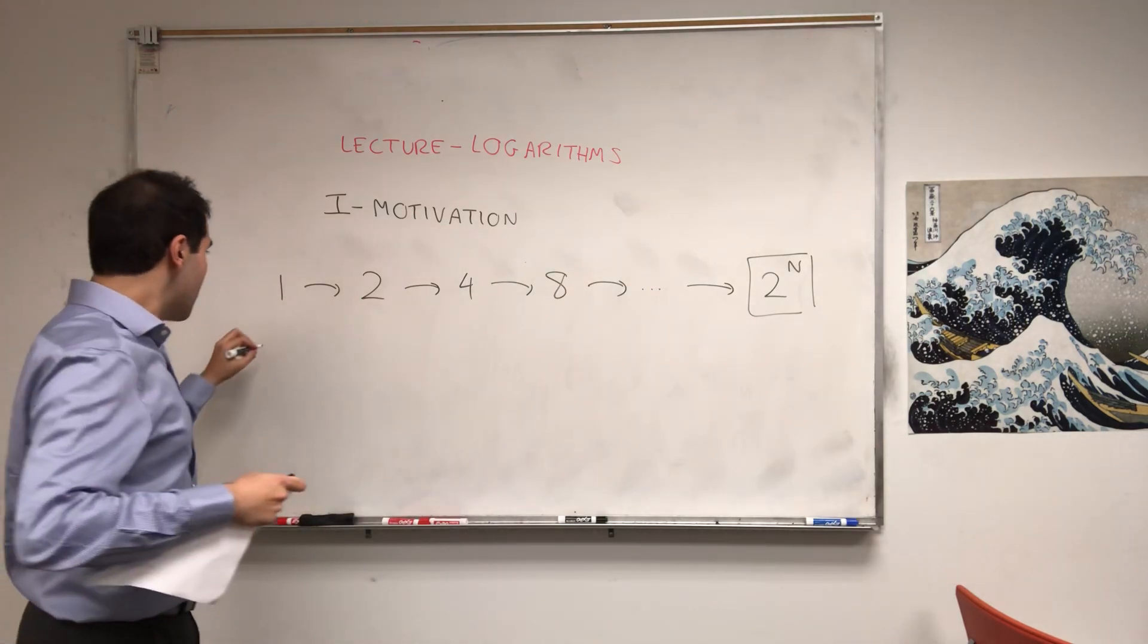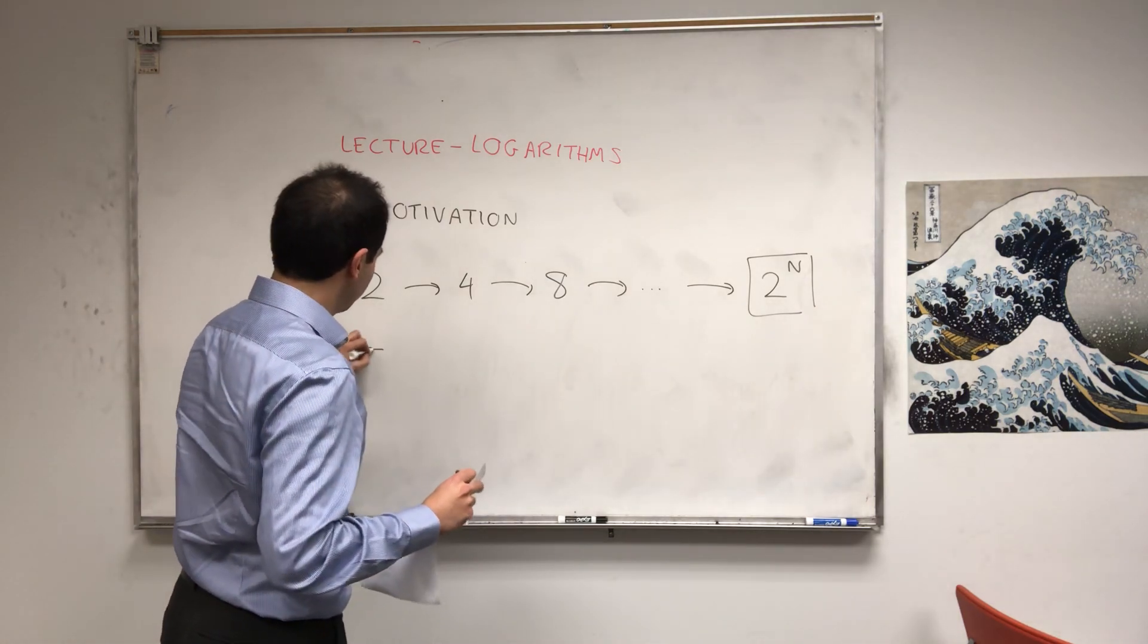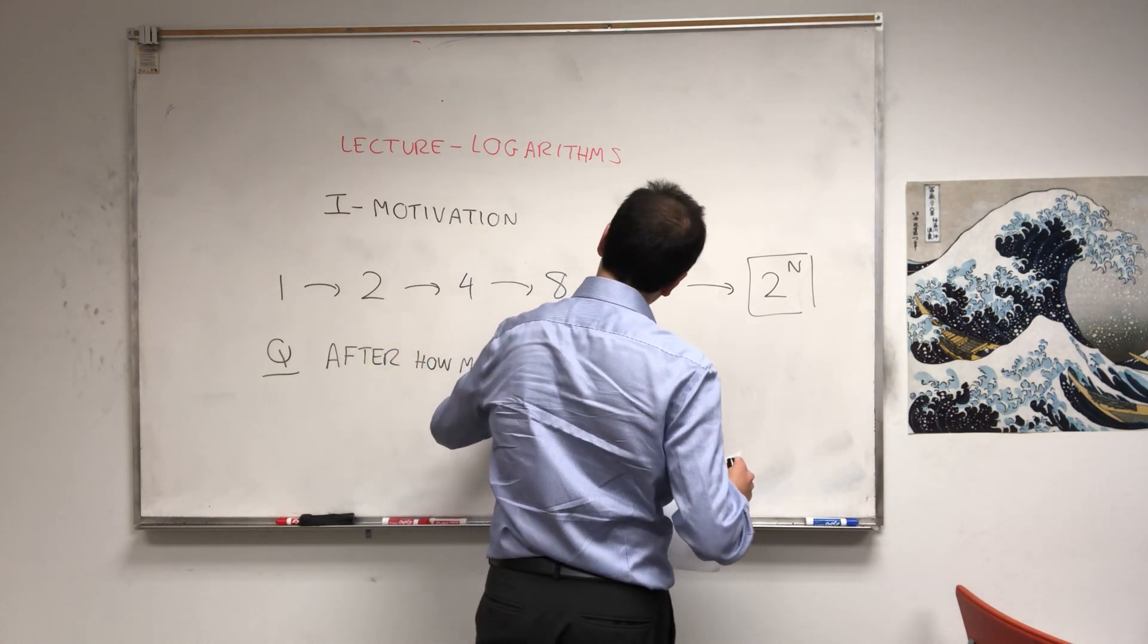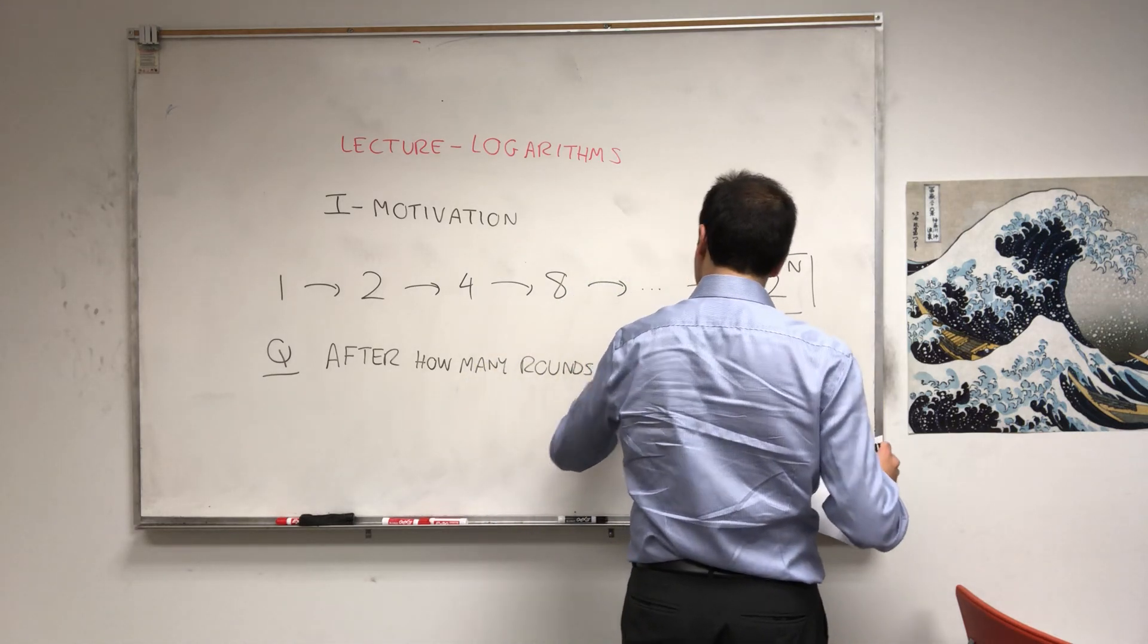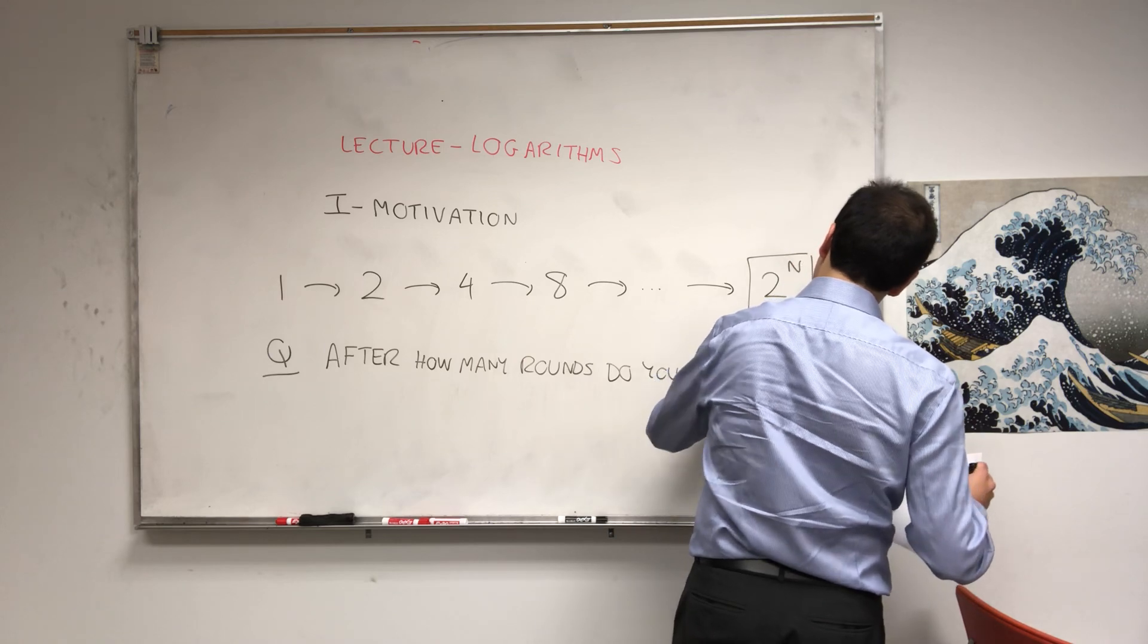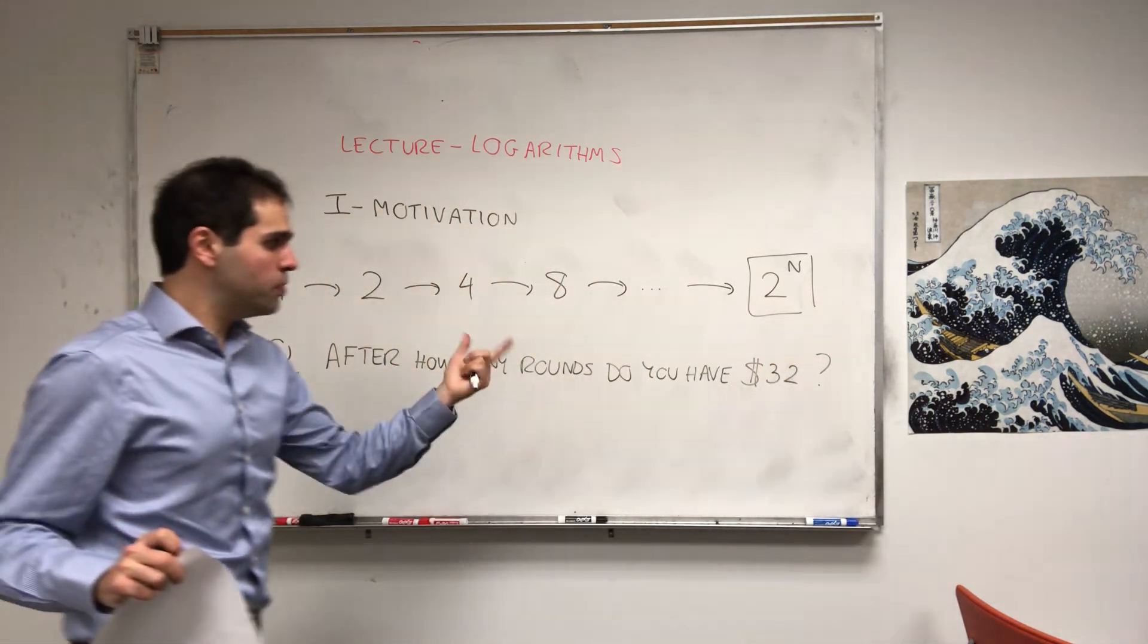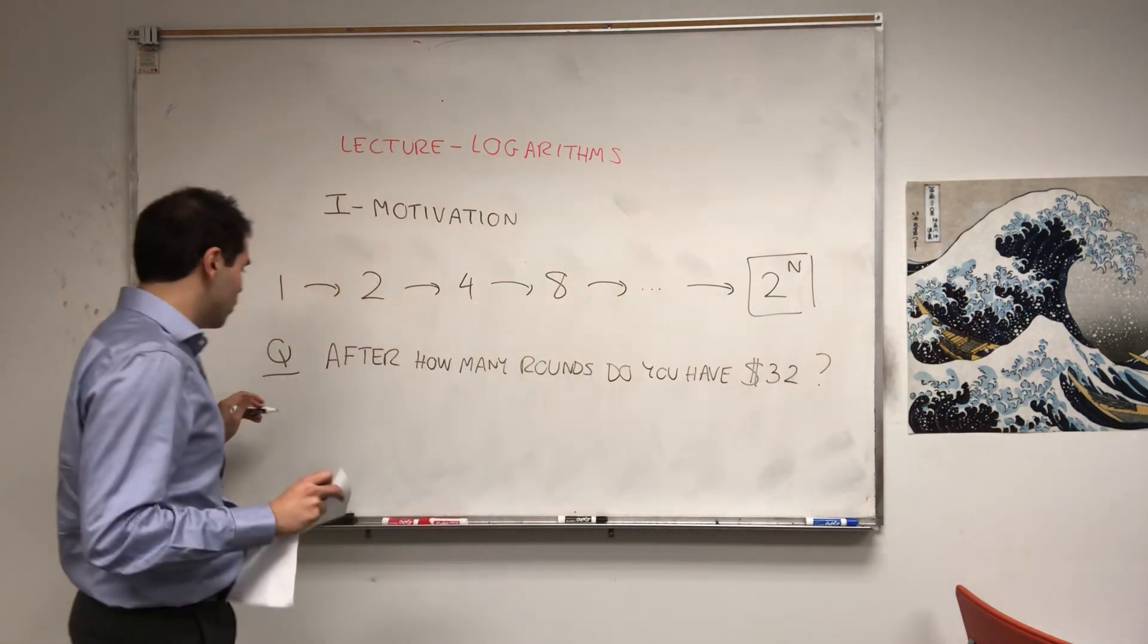So, instead, let's ask a more interesting question. Namely, after how many rounds do you get thirty-two dollars? And notice, the answer to that relies precisely on just writing thirty-two as a power of two.